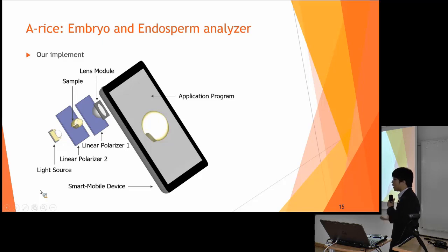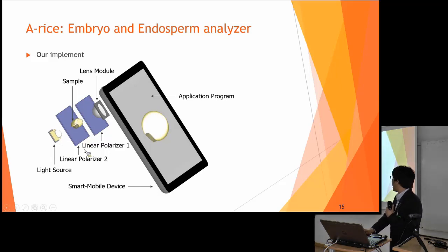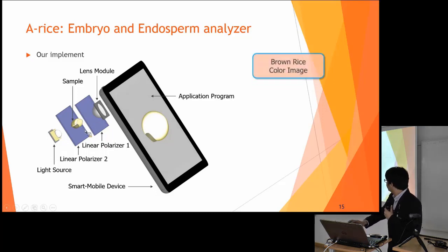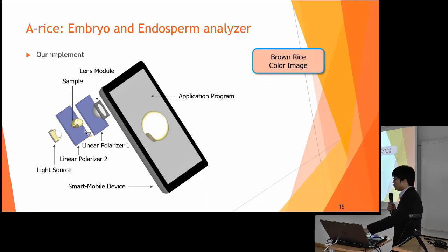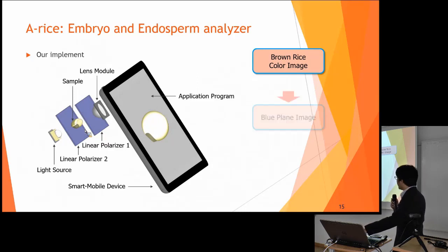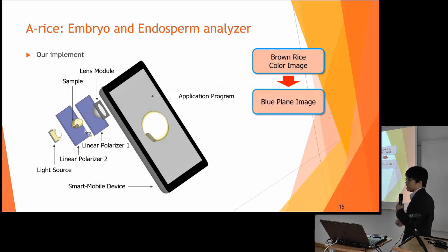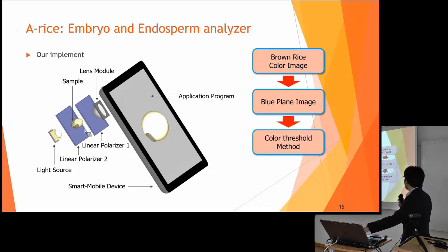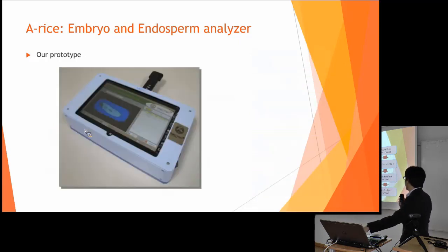We have a mobile tablet — a Windows platform — along with a light source, a linear processor, and we place samples over here, then just take a picture of our rice grain. After the procedure, we take the photo as a brown rice color image, then perform positive processing on the blue channel image, followed by color textural method and crop analysis method.